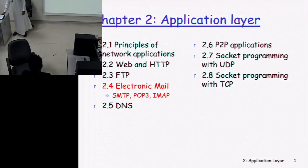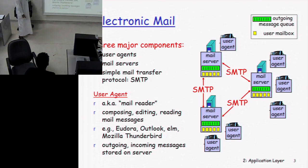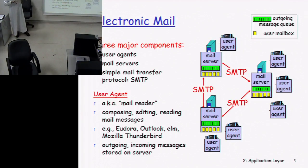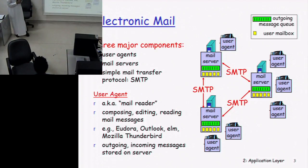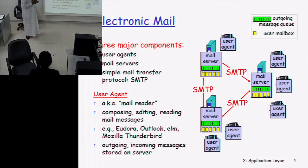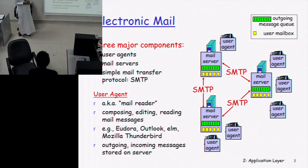Let's start with the three major components of the email protocols. The three major components are: first, the user agent, which is working on the user system in order to compose and send the email to the mail server. The second component is the mail server, which is the main component of the email system. The third component is the Simple Mail Transfer Protocol, SMTP.